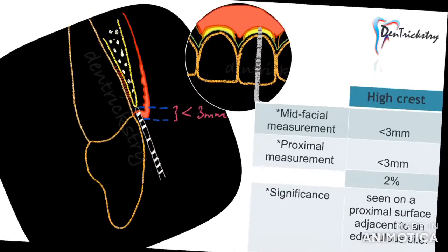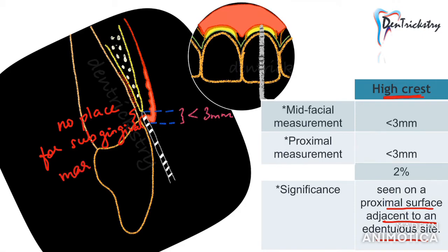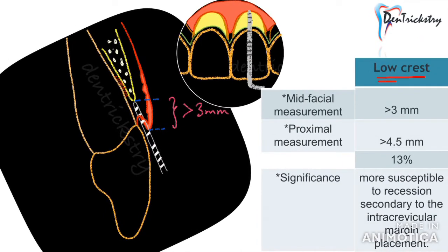The next category is the high crest patient. High crest is not something you find very commonly — it is mostly seen in the proximal surface adjacent to an edentulous site. It is usually not possible to place a subgingival margin in such cases because the margin will be very close to the alveolar bone, resulting in breach of biologic width and eventually leading to chronic inflammation. The third category is the low crest patient, where the mid-facial measurement is greater than 3 millimeters and the proximal measurement is greater than 4.5 millimeters. Low crest patients are considered more susceptible to recession secondary to placement of a subgingival crown margin.